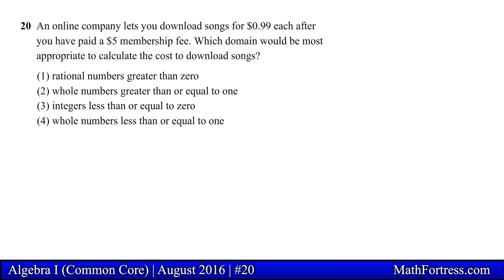An online company lets you download songs for 99 cents each after you have paid a $5 membership fee. Which domain would be the most appropriate to calculate the cost to download songs? In this problem we need to determine the type of numbers that our variable is allowed to have in order to appropriately calculate the cost to download songs.